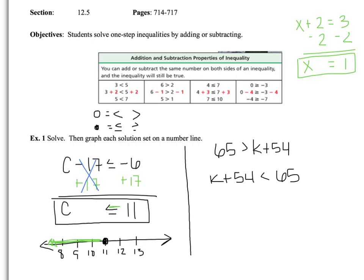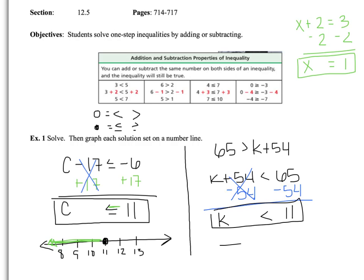My inverse operation for adding 54 is subtracting 54. I'm going to do that to both sides. Positive 54 and negative 54 cancel to 0, and I have K is less than 11 as my solution. When I go to graph this, I create my number line and add in my numbers above and below 11. Since the inequality sign is a less than sign, it is going to be an open dot on 11, and my arrow is going to go to the left — just like before, except the dot is open.